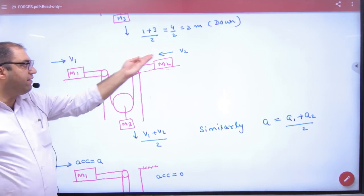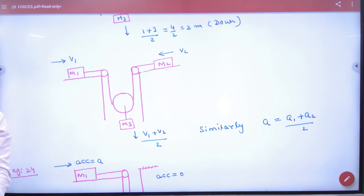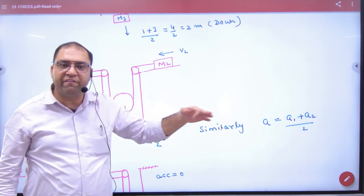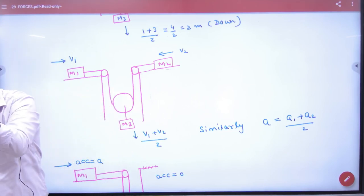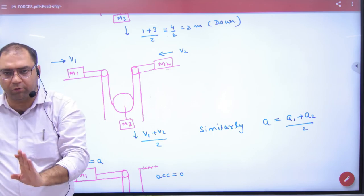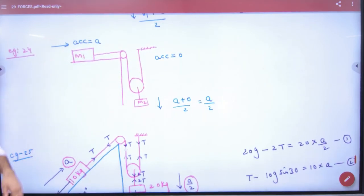And similarly this is valid for acceleration also. If this block is coming with a1, this block is coming with a2, then the pulley will go down with an acceleration of a1 plus a2 by 2. Just listen, don't worry. I'm just telling you the shortcut. Special case if you assume.